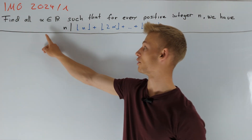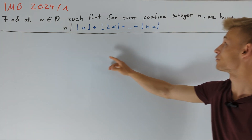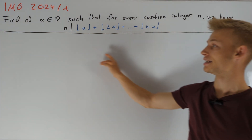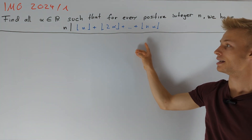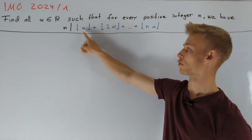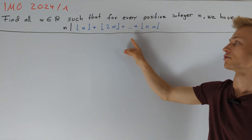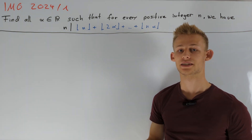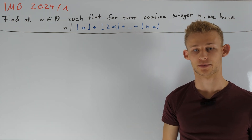We are asked to find all real numbers alpha such that for every positive integer n, n divides the following sum: namely the floor of alpha plus the floor of 2 alpha and so on up to the floor of n times alpha. Here the floor of a real number is the largest integer less than or equal to this number.